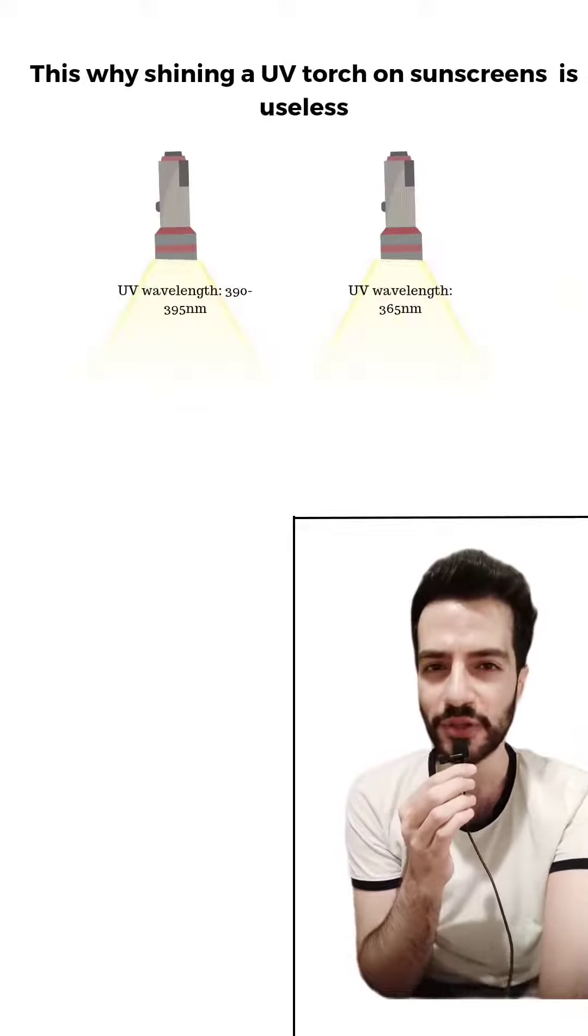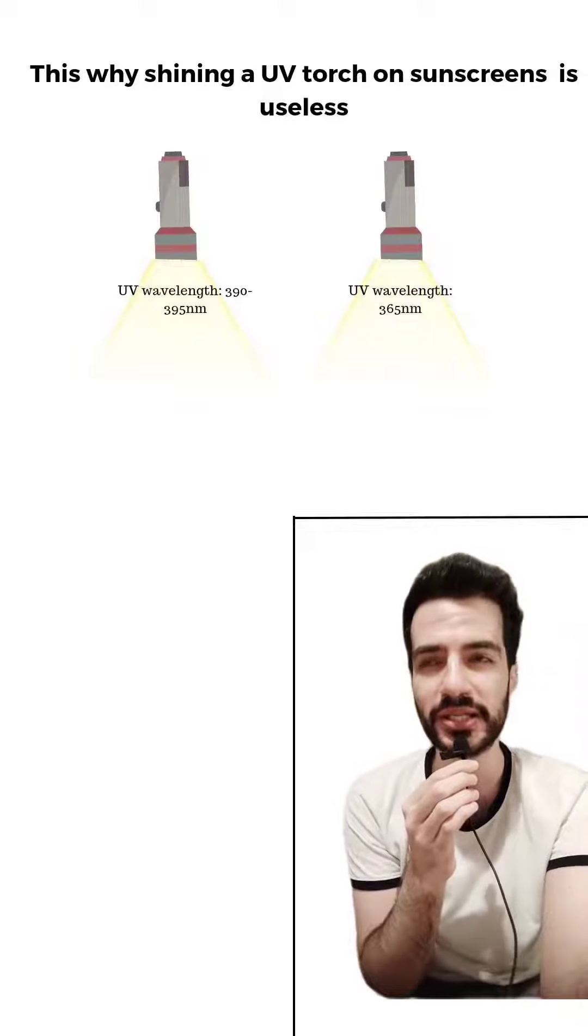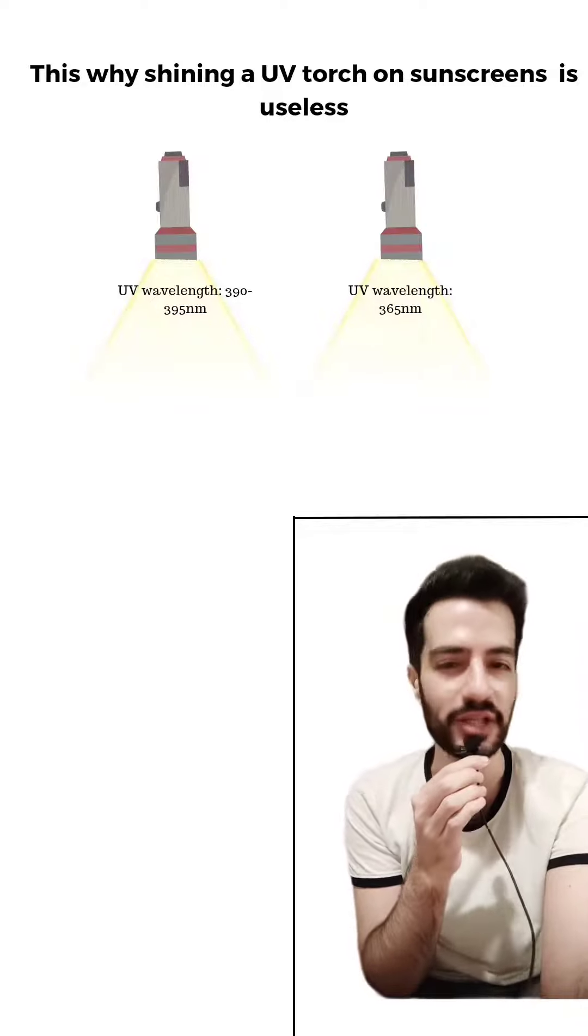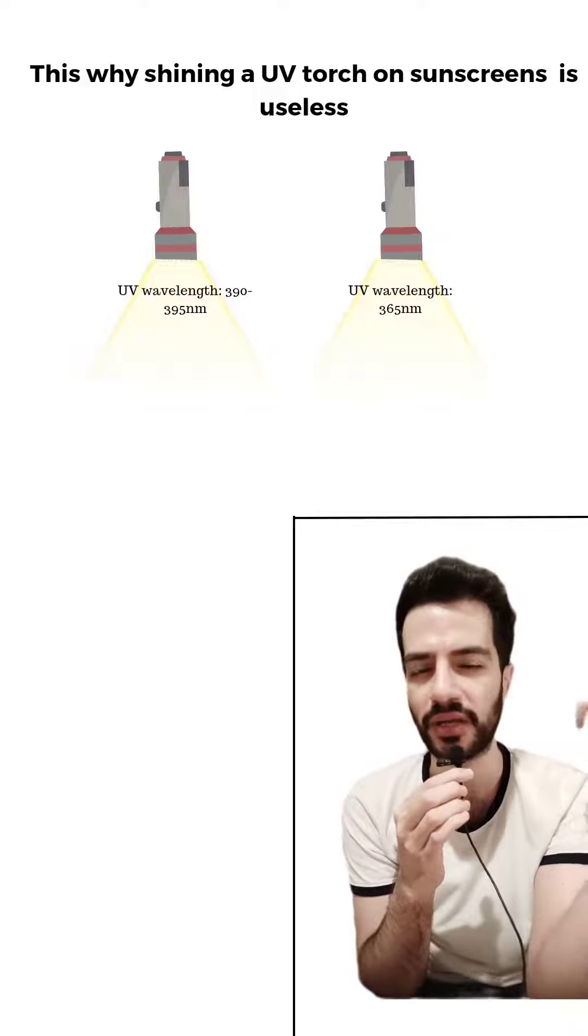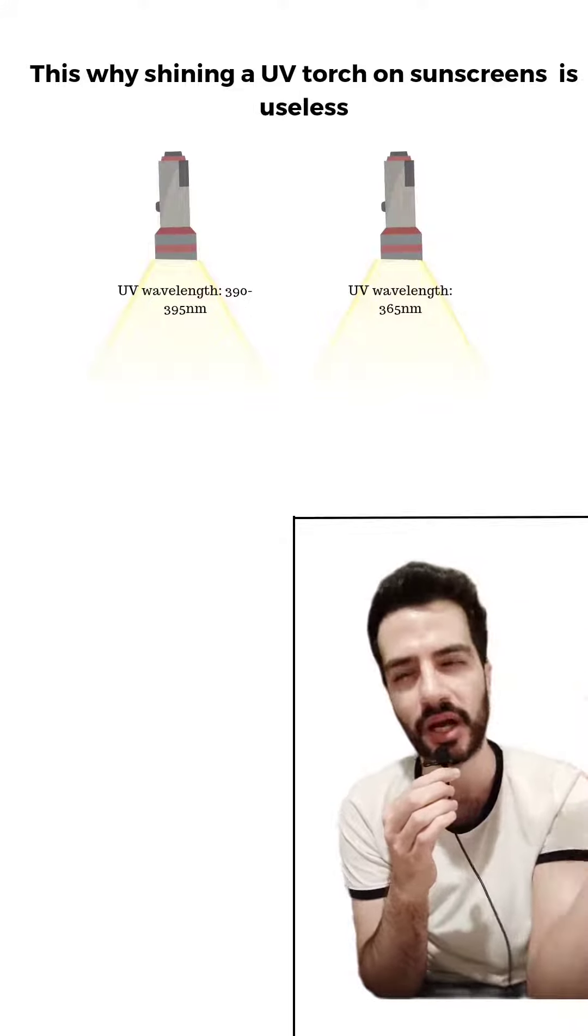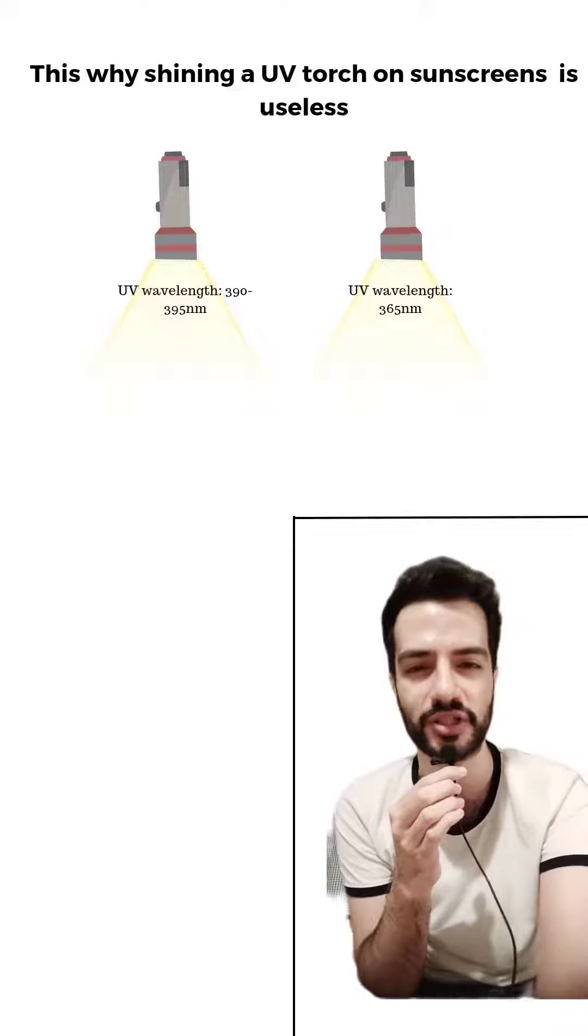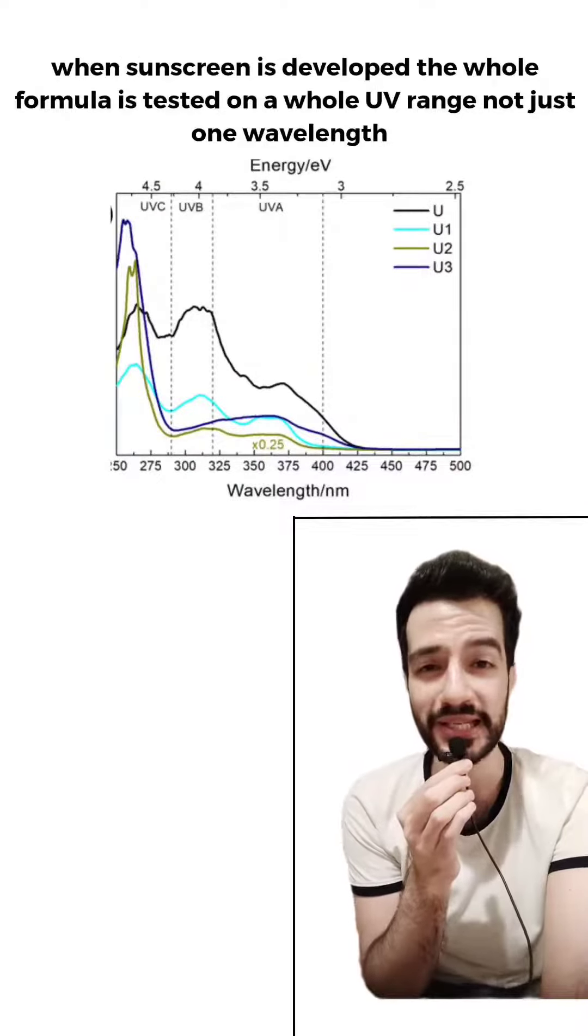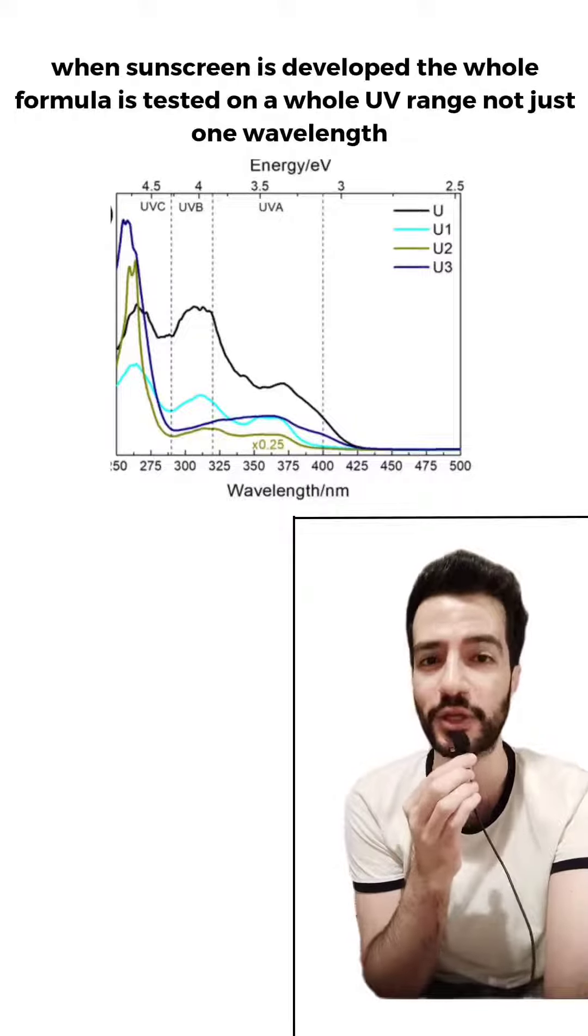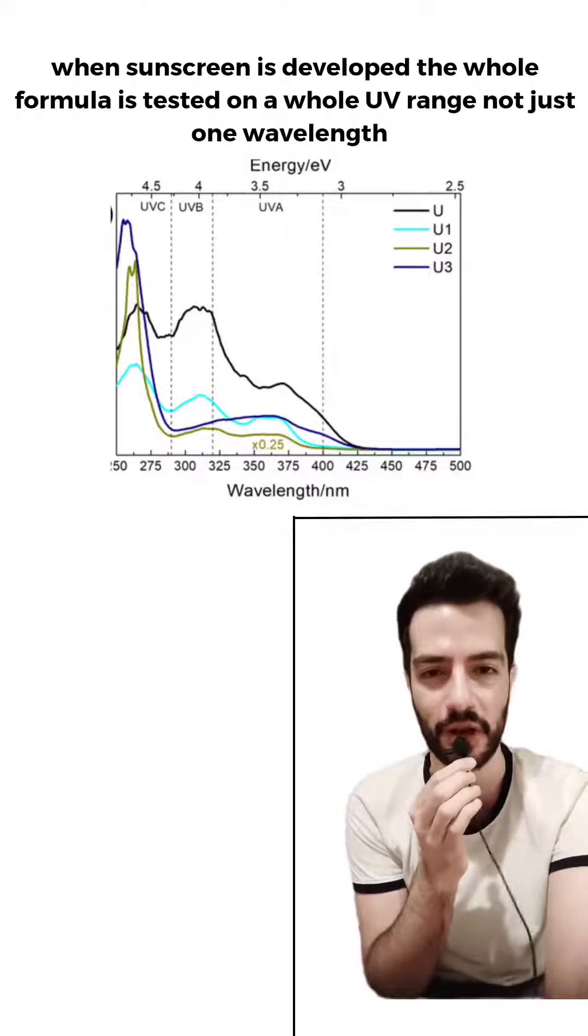And this is why shining a UV torch on a sunscreen is useless, because the commercially available torches that you can find on Amazon have specific wavelengths. Some of them are 365 nanometers, others are between 390 and 395. But when sunscreen is developed, the whole formula is tested on a whole range of UV, not just one wavelength, as you can see from the chart.